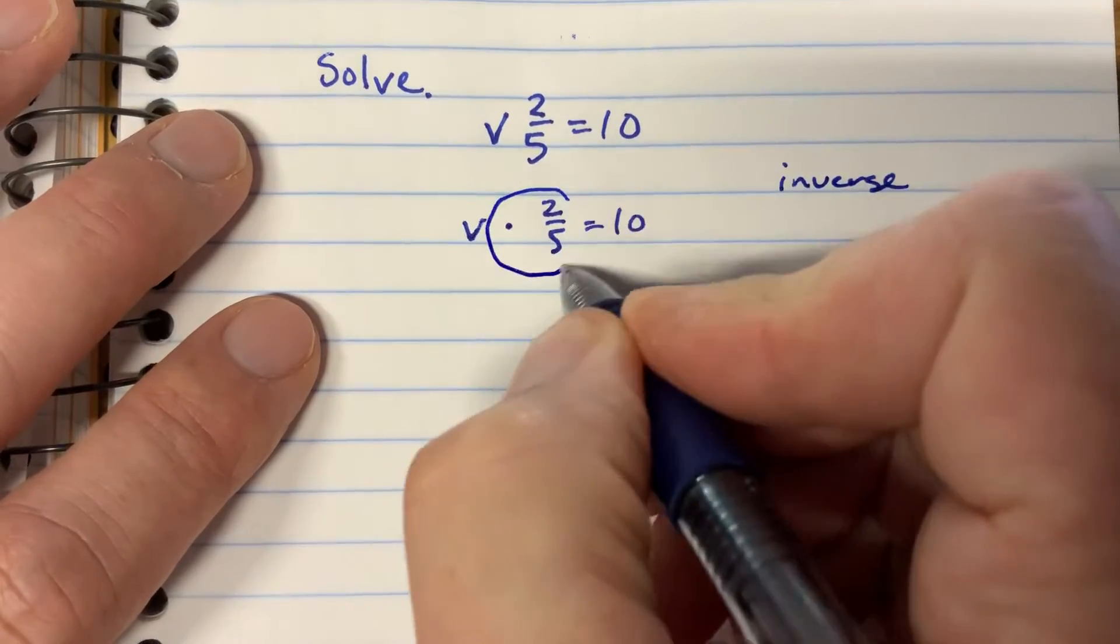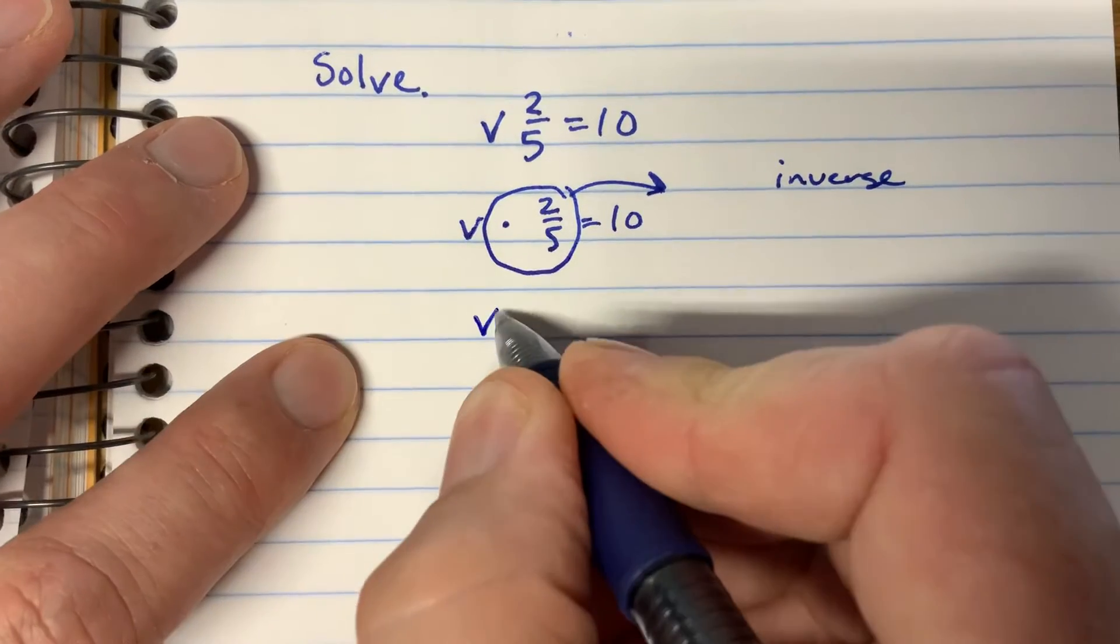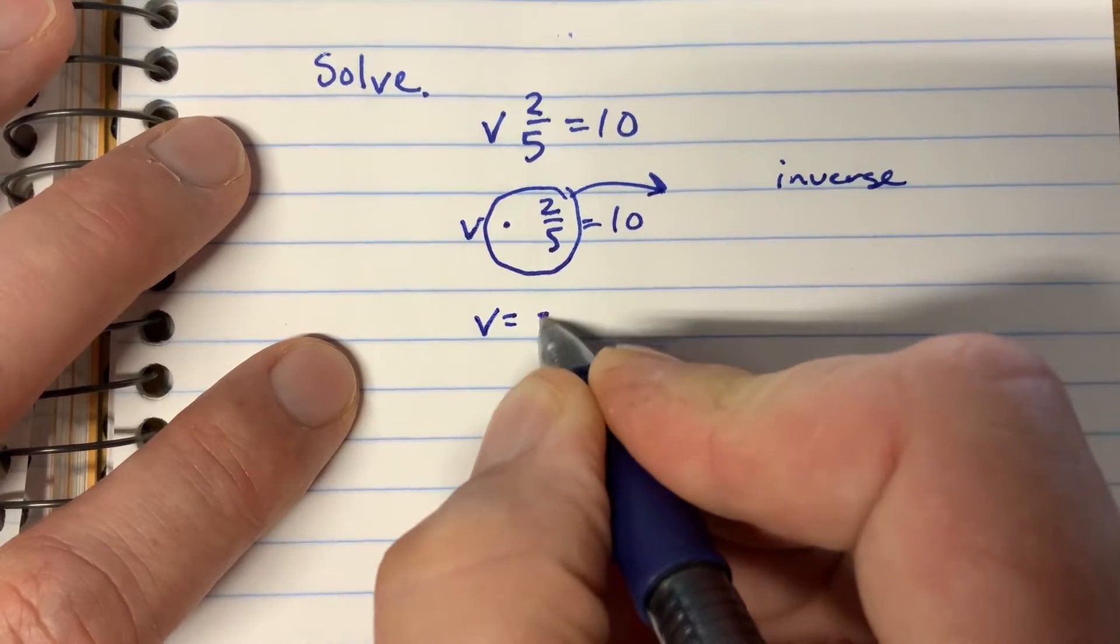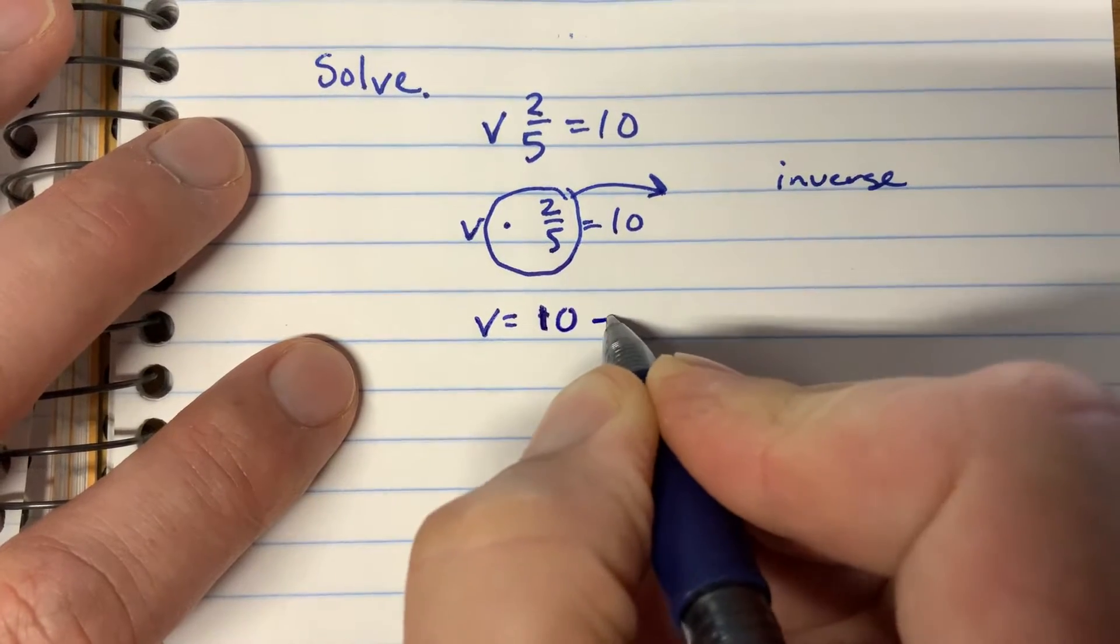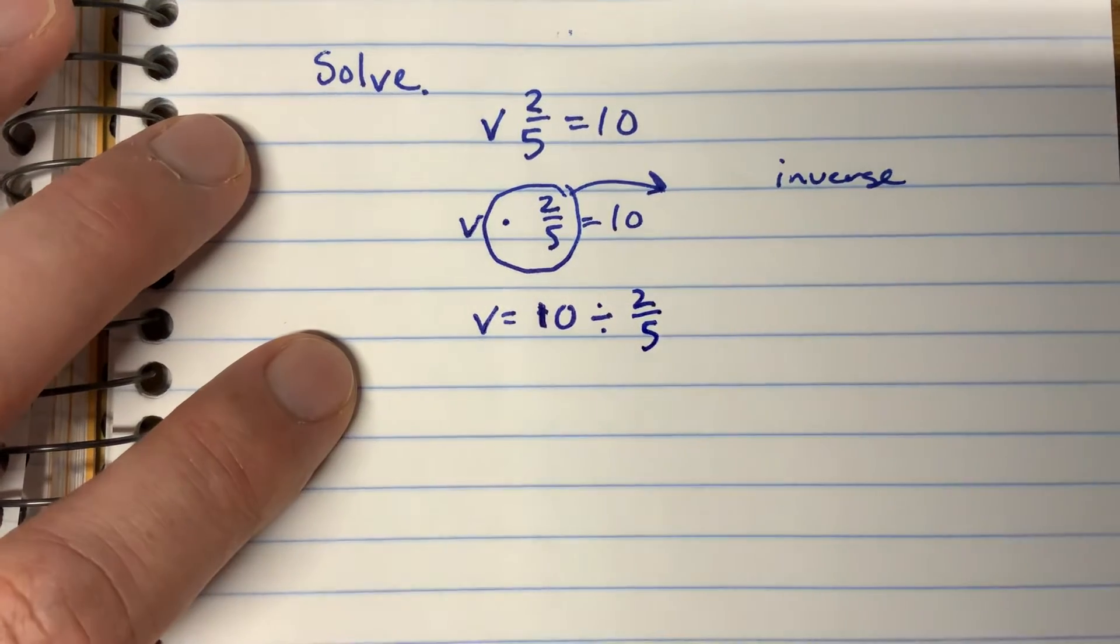We're going to take that times two-fifths, and remember it has to go after this 10, not before it. So v here is going to equal 10 divided by, because the opposite of multiply is divide, two-fifths.